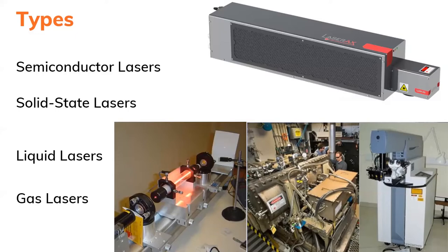Solid-state lasers have a solid medium. They are made of materials like ruby or crystalline materials — for example, YAG, which stands for Yttrium Aluminum Garnet. These solid-state lasers are mainly used in military applications or for drilling metals.